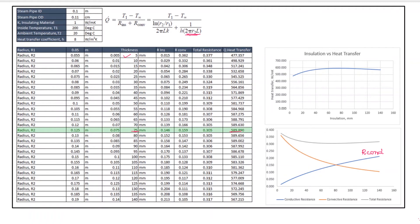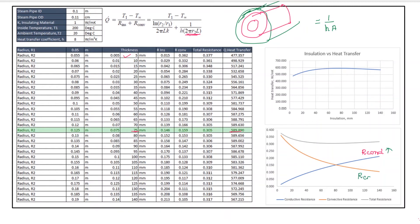Convective resistance is a function of the outer area. If you increase the area — for example, this is a pipe with insulation material — we increase the insulation, so the outer area increases over time. If you look at the convective resistance, the formula is 1 divided by h·A. If the area increases, the convective resistance will decrease. Therefore, the overall resistance will decrease and the heat transfer rate will increase, up to a certain point.